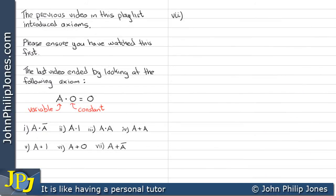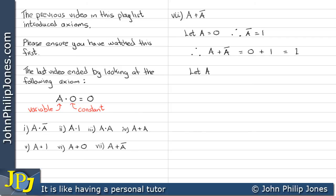Let's look at the next example: A OR NOT A. I'm going to let A equal zero. Therefore NOT A will be the opposite, which is one. Therefore A OR NOT A is zero OR one, which gives us one. Now choosing A to be one, therefore NOT A will be the opposite, which is zero. Therefore A OR NOT A becomes one OR zero, which gives a one.